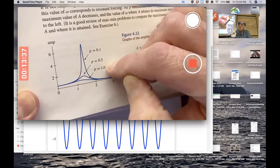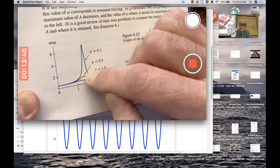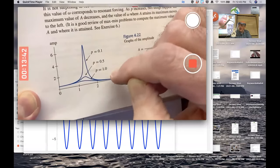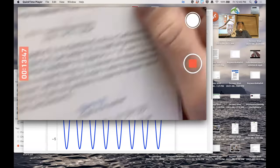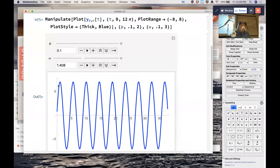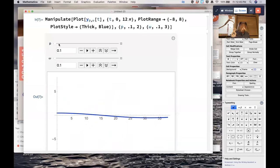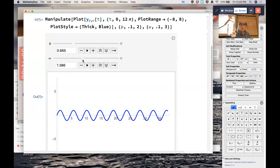For larger values of P, the amplitude will still get bigger as omega approaches 1.4, but it's not as extreme. If I make P bigger, as omega increases, the amplitude is getting bigger, but it's not increasing very much. You can see it's increasing a bit. It's maximized still near 1.4, but then the amplitude decreases a bit.